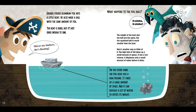Grubbs folded aluminum foil into a little boat. He also made a little ball with the same amount of foil. The boat is dense, but not dense enough to sink — she's floating! The foil ball sinks. The weight of the boat and the ball are the same, but the squished ball is much smaller than the boat. The tight ball of foil takes up a small amount of space — it has a low volume — and displaces only a small amount of water before it sinks. The foil boat has a high volume, takes up a large amount of space, and can displace a lot of water to offset its weight.